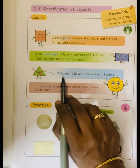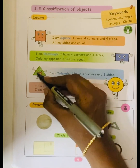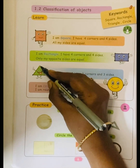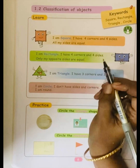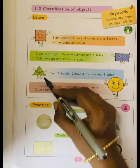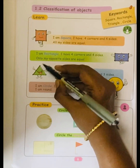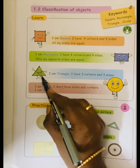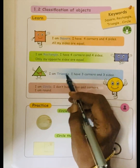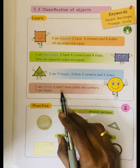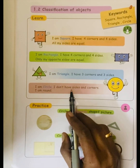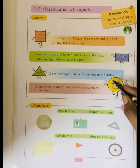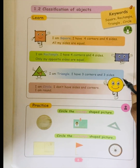Next one: I am a triangle. I have three corners — one, two, three. Three corners and three sides — one, two, three. I am a circle. I don't have sides and corners. I am round.